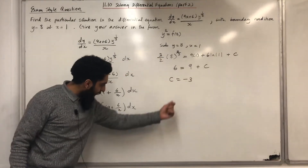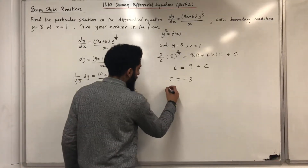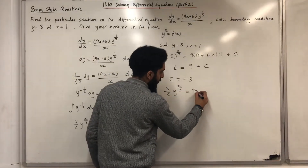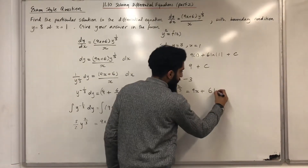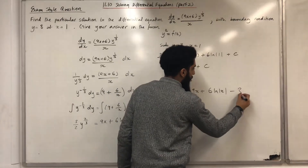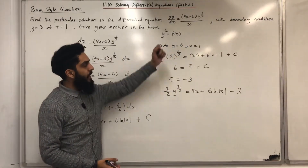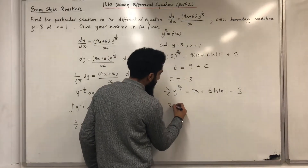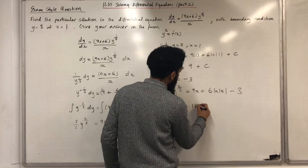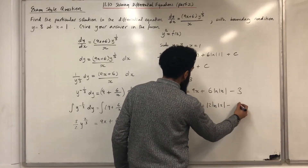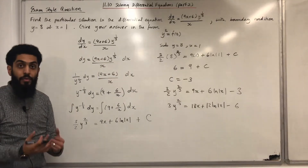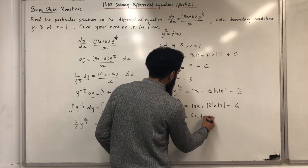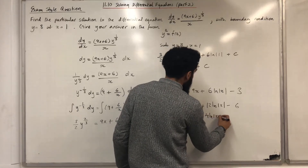Now I put this c value back into the equation: (3/2) y^{2/3} = 9x + 6 ln|x| − 3. I need to write the equation in the form y² = f(x). Multiplying both sides by 2 gives 3y^{2/3} = 18x + 12 ln|x| − 6. Dividing both sides by 3 gives y^{2/3} = 6x + 4 ln|x| − 2.